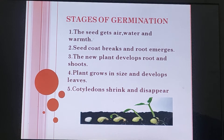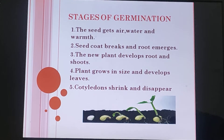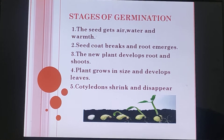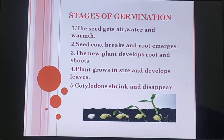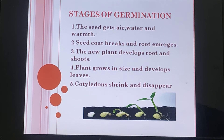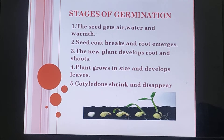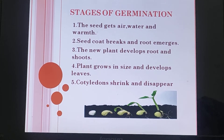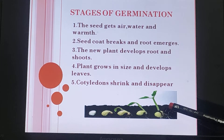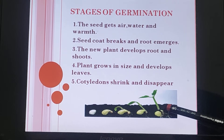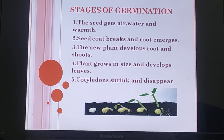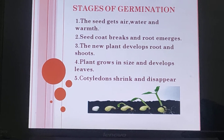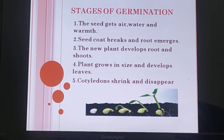Once the leaves develop, the seed can prepare its own food by the process of photosynthesis. Before that, the seed received its nutrition from the stored cotyledon. Then finally the cotyledon shrinks and disappears, and at this stage the plant is known as a sapling. So these are the stages of germination.